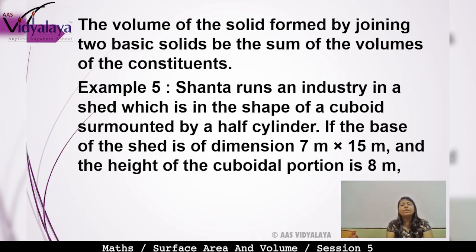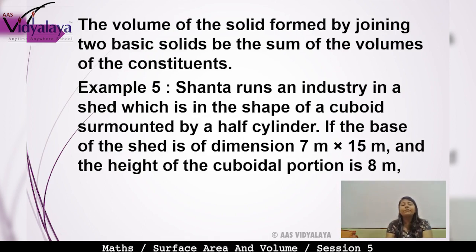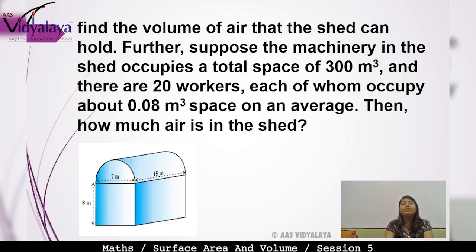Now for our example: Shanta runs an industry in a shed which is in the shape of a cuboid surmounted by a half cylinder. The base of the shed has dimensions 7m × 15m and the height of the cuboidal portion is 8m. Find the volume of the air that the shed can hold.